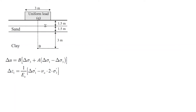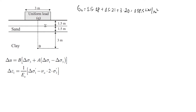Let's start by calculating stresses before the application of the load. The vertical stress equals 1.5 meters of sand above the groundwater level times the unit weight of 18, plus 1.5 meters of sand below the groundwater level at unit weight 21, plus 3 meters to point B in the clay at unit weight 20 kN/m³. This gives us approximately 118.5 kN/m². Next we estimate the pore pressure — the distance from point B to the groundwater level is 4.5 meters.